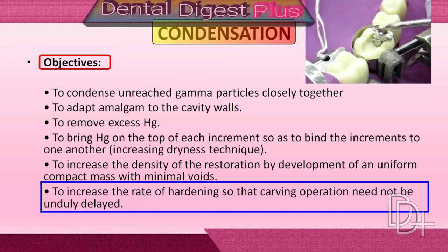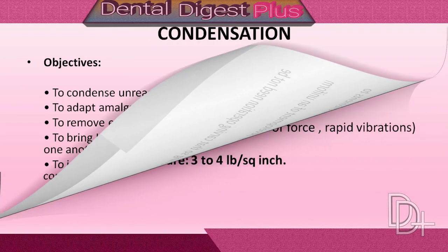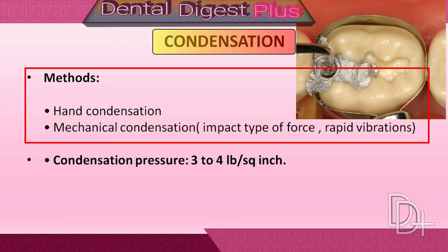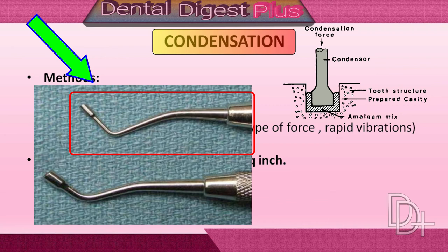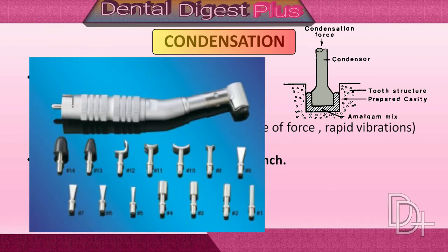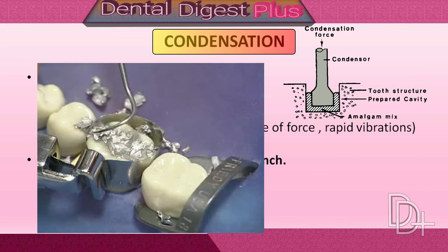Condensation is also done to increase the rate of hardening, so that carving can begin sooner. The field of operation must be kept absolutely dry during condensation. Amalgam increments are condensed by overlapping steps and lateral pushing, using hand, automatic, or ultrasonic condensers. Sufficient pressure of 3 to 5 kilograms force should be used. Small condensers provide greater condensation force. Ultrasonic condensers are not preferred, to avoid mercury evaporation. The longer the time between mixing and condensation, the weaker the amalgam will be. The cavity should be overfilled before carving to ensure proper closure of margins and removal of the mercury-rich layer.